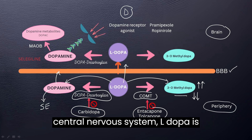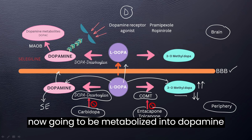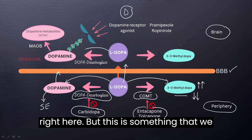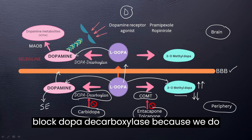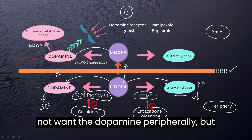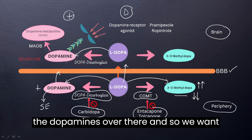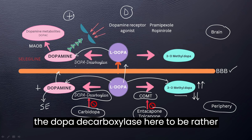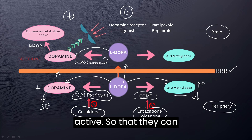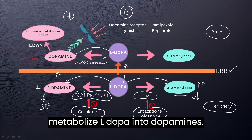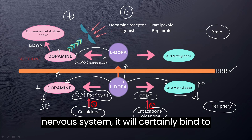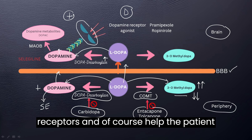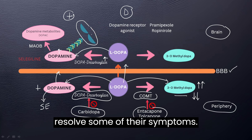Now in the central nervous system, L-dopa is going to be metabolized into dopamine — and this is something we really need. In contrast to the periphery, carbidopa had to block dopa decarboxylase because we do not want dopamine peripherally. But in the central nervous system, we do want the dopamine there, so we want dopa decarboxylase to be active to metabolize L-dopa into dopamine. When dopamine is high in the CNS, it will bind to dopamine receptors and help the patient resolve some of their symptoms.